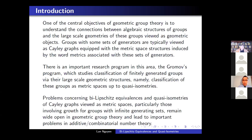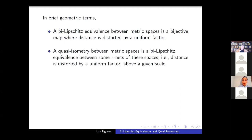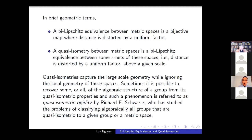The problems concerning bi-Lipschitz equivalences and quasi-isometries of Cayley graphs, particularly those involving growth for groups with infinite generating sets, remain wide open in geometric group theory and lead to important problems in additive combinatorial number theory. In brief geometric terms, a bi-Lipschitz equivalence between metric spaces is a bijective map where distance is distorted by a uniform factor. A quasi-isometry between metric spaces is a bi-Lipschitz equivalence between some R-nets of these spaces — in other words, distance is distorted by a uniform factor above a given scale.